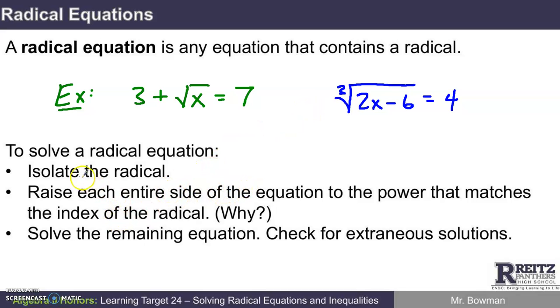The steps for solving a radical equation are here. First you want to, if you can, isolate the radical. Isolate means to get it by itself on one side of the equation. Your next step would be to raise each entire side of the equation. Sometimes we forget that it's got to be the whole side. We're going to raise each entire side of the equation to the power that matches the index of the radical. Why?